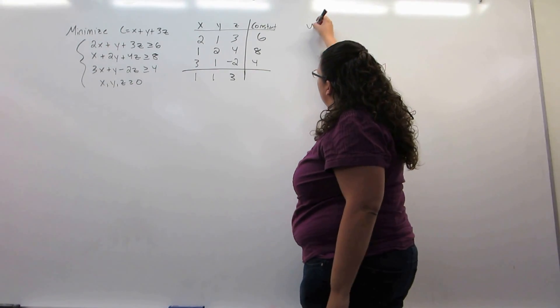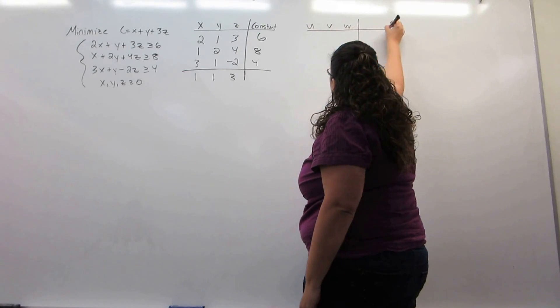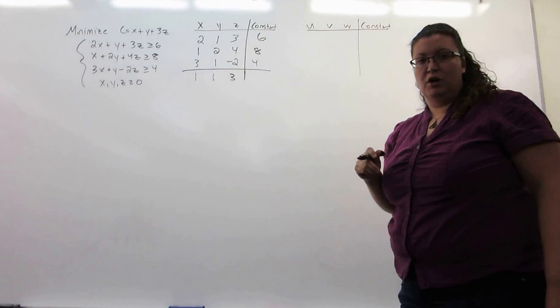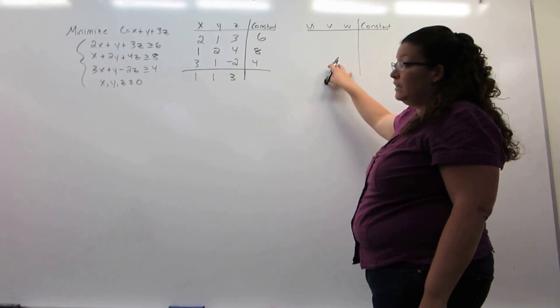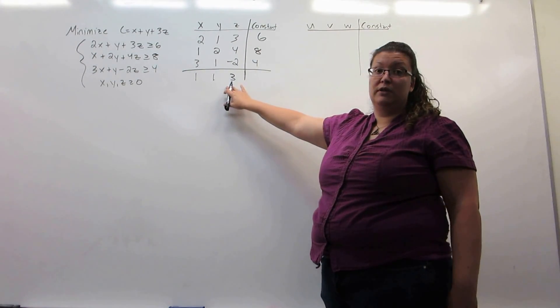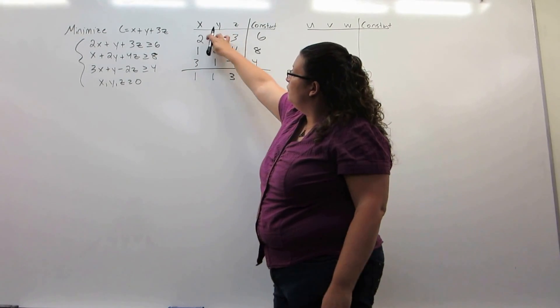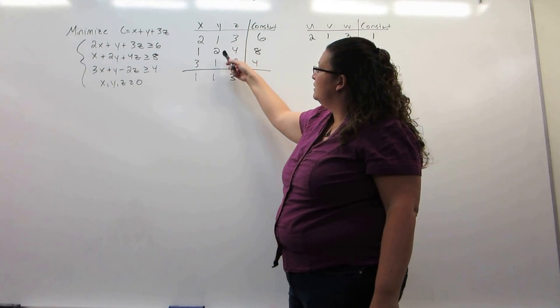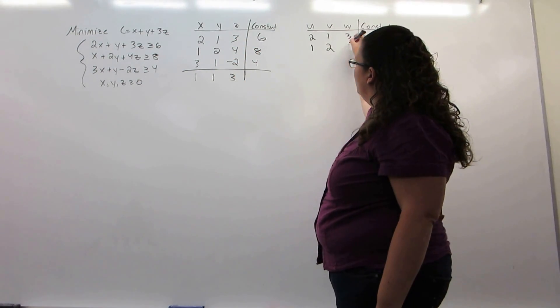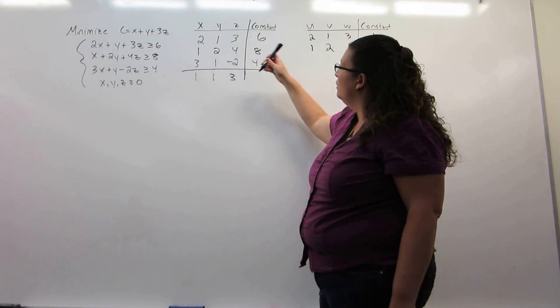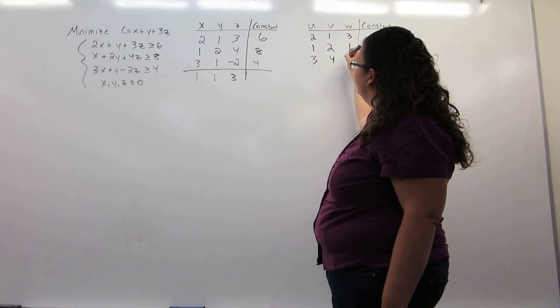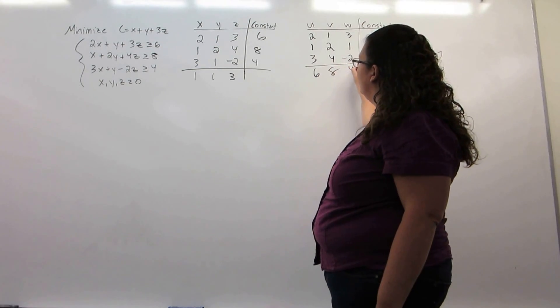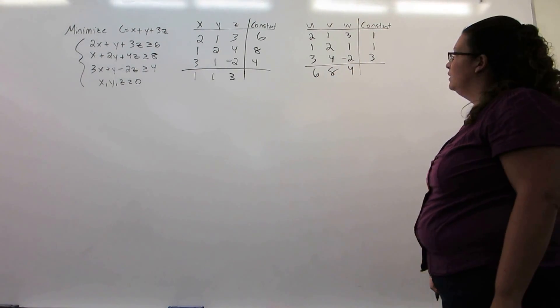Now, the dual problem will have different variables. They're the variables we would have used as slack variables in the original problem. And to get its tableau, we take this and we transpose it. The first column will become the first row, the second column will become the second row, the third column will become the third row, and the fourth column becomes the fourth row.